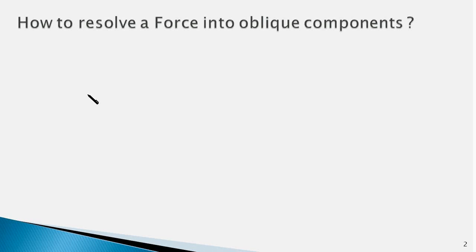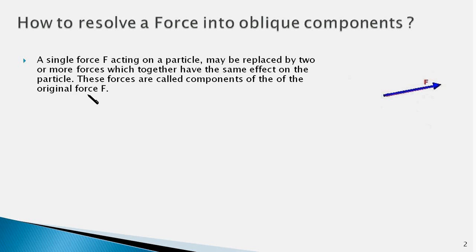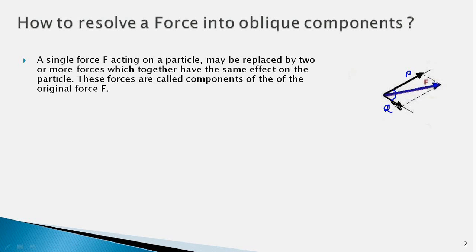In this video I'll explain how to resolve a force into oblique components. If we have a force F which acts on a particle, we can replace this force by two forces P and Q which together have the same effect on the particle. P and Q are the components of force F. Note that the angle between the two components is not 90 degrees, so we call them oblique components. If that angle were 90 degrees, we would call them rectangular components.